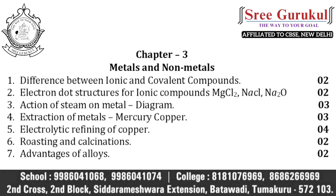Chapter three is Metals and Non-metals. We can expect questions on the difference between ionic and covalent compounds for two marks, and electron dot structures for ionic compounds — frequently asked examples are magnesium chloride, sodium chloride, and sodium oxide. One important three-mark diagram is the action of steam on metal, which you must practice. For extraction of metals, mercury and copper are repeatedly asked. Electrolytic refining of copper is a very important three-mark question. Also study the difference between roasting and calcination for two marks, and advantages of alloys for two marks.